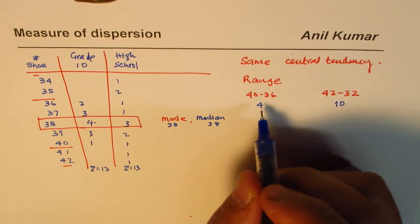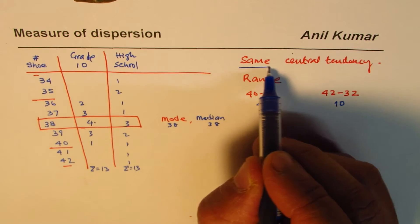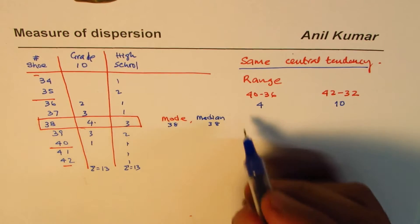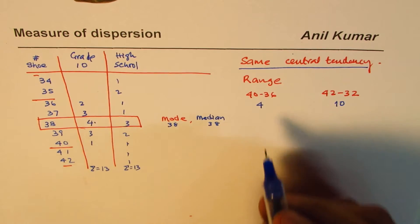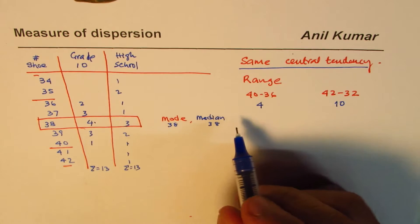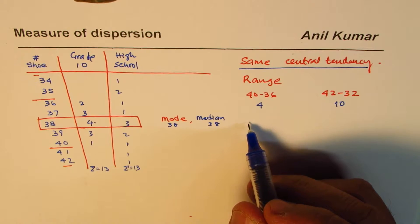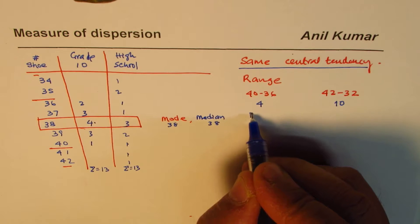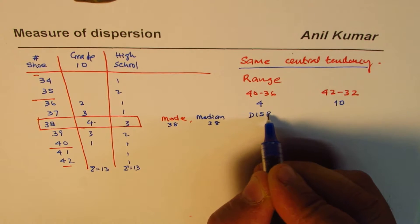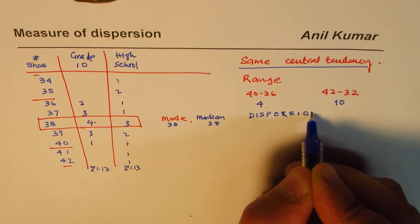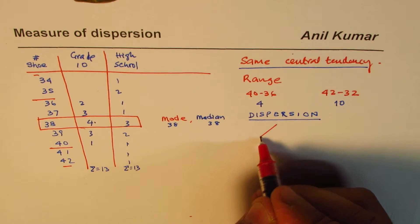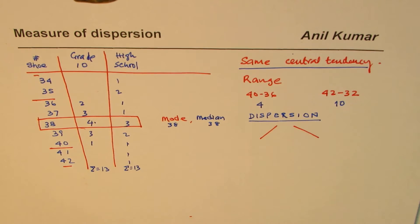So two datasets that are similar in the sense that they have the same central tendencies — mean, mode, and median — have very different dispersion. That is where measure of dispersion becomes important. Moving forward, we'll look at dispersion from two different angles: one with the base as median, and the other with the base as mean.